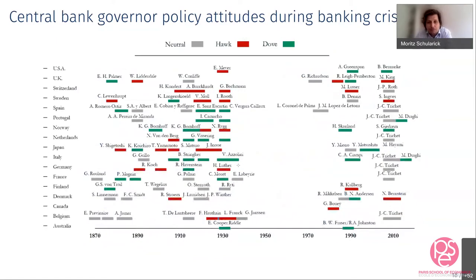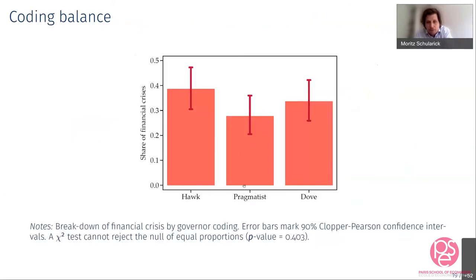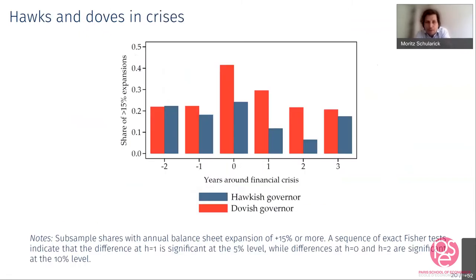Here's how the full set looks from 1870 to today. Jean-Claude Trichet is classified as one of the gray neutrals. We have Bernanke as a dove, though there's a good case to call him neutral. For the empirical analysis, we put the neutrals in one bin and focus on identifying the real hawks, because it's very hard to distinguish dovish from neutral. There are some characters in central bank and financial history who are real hawks, and those we want to capture. The coding balance looks quite good — hawks, pragmatists, and neutrals throughout. This is the first event study: the probability or share of having large balance sheet expansions in financial crises for hawkish versus dovish governors. Doves are much more likely to sign off on large balance sheet expansions in the crisis year and the first two years after, and those differences are statistically significant.